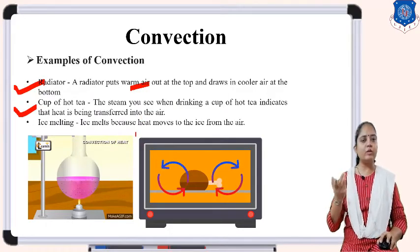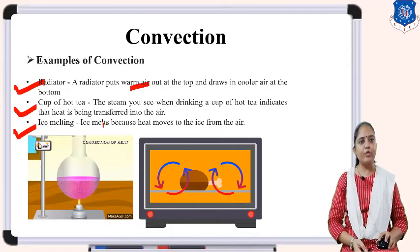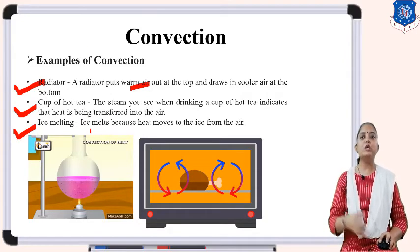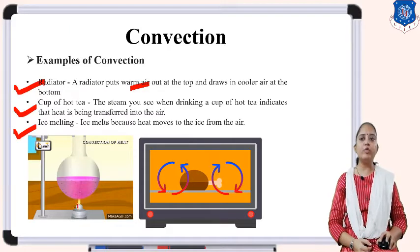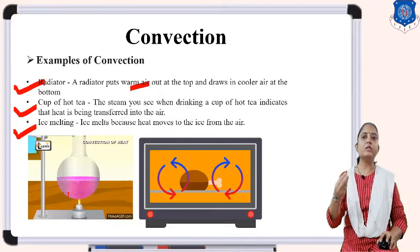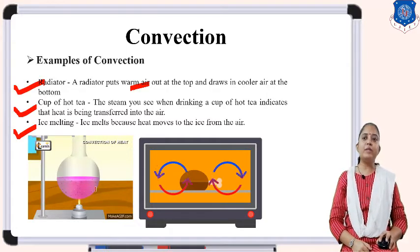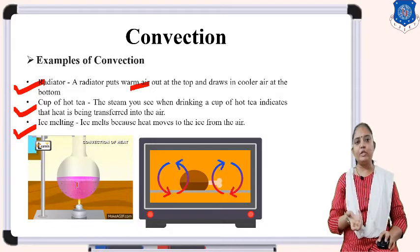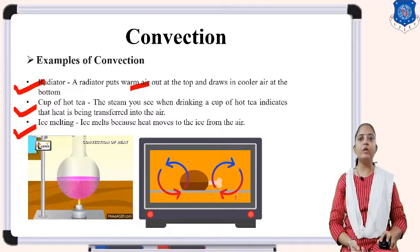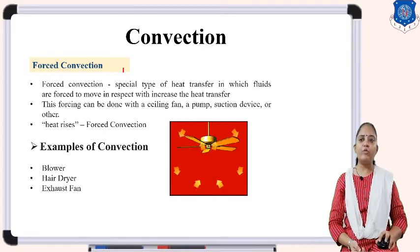Another example is a cup of tea — the steam you see when drinking hot tea indicates heat is being transferred to the air without any external force. Ice melting is also a process of natural convection; ice melts because heat moves from the air to the ice. In the diagram, heat is given to the fluid and molecules circulate — hot molecules go upward and cold molecules go downward due to gravity and change of temperature.